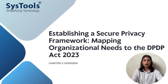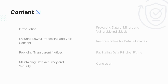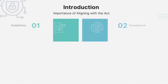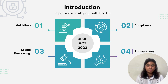Hello and welcome. We'll talk about Chapter 2 of the DPDP Act and how we can map it to any organizational needs. It's very crucial for organizations to align their data processing activities with the Act. This will help ensure a strong and compliant privacy framework.